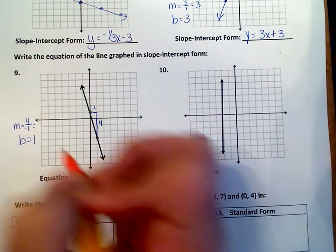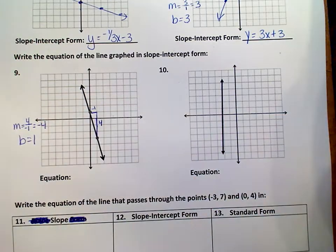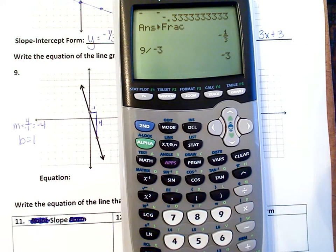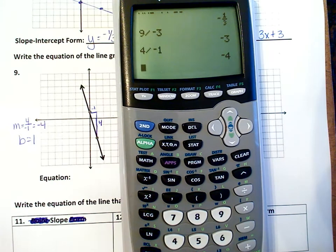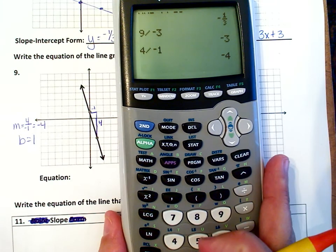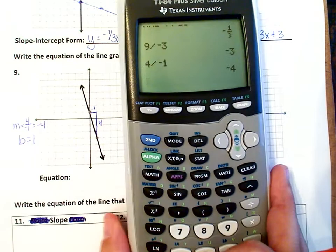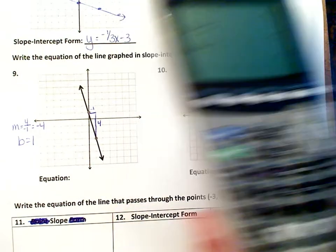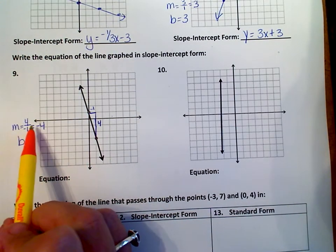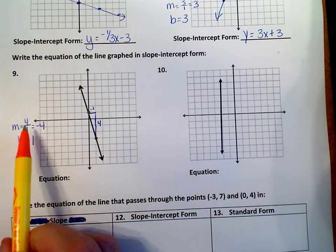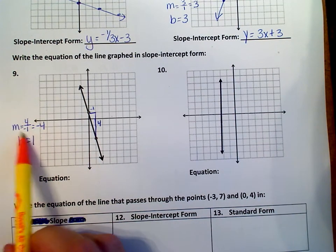Now, if you don't know that that's negative 4, then put it in your calculator. 4 divided by negative 1 is negative 4. Use this, it's in front of you. Do not leave the slope 4 over negative 1. That is not simplified.